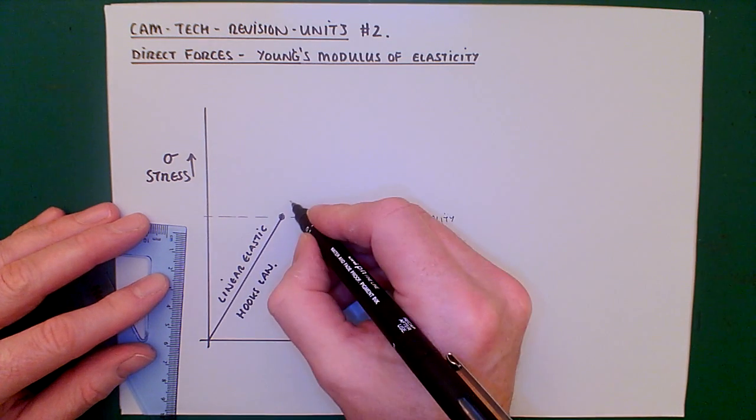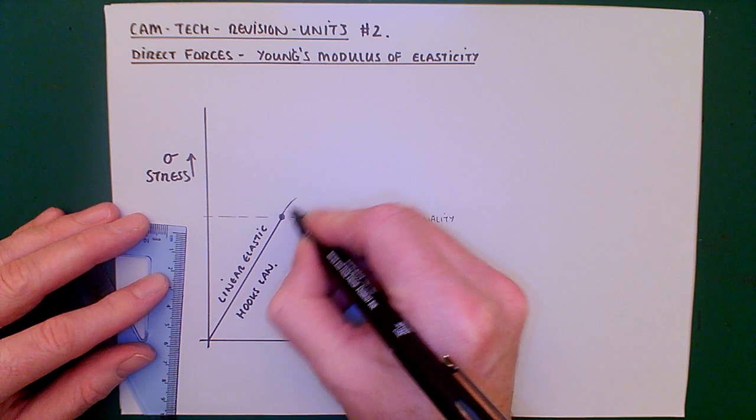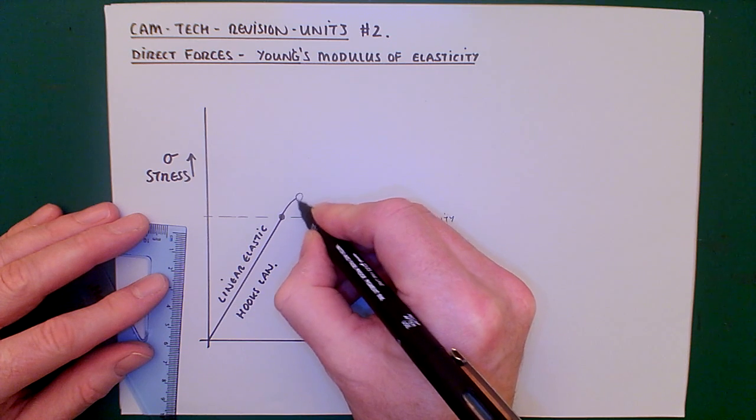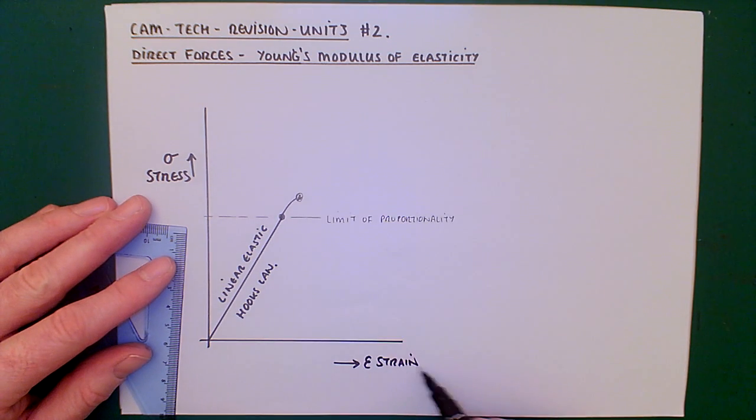At this point, the limit of proportionality, we're still within an elastic region. But there's a limit now. The material is beginning. So for the same amount of stress, it's beginning to change its length.